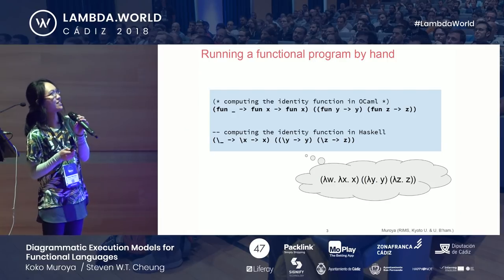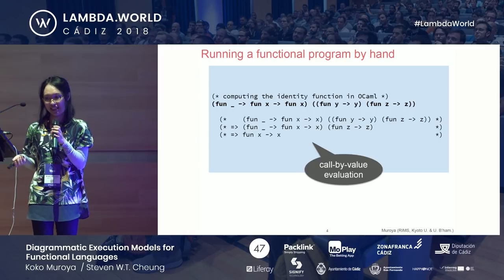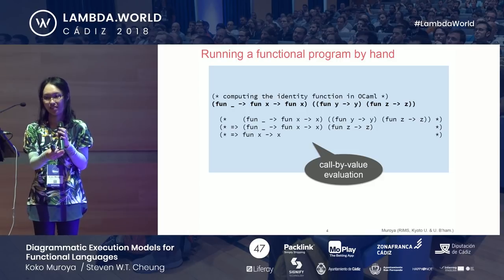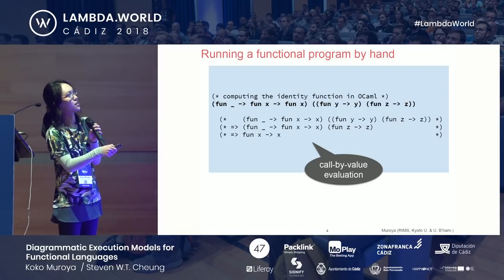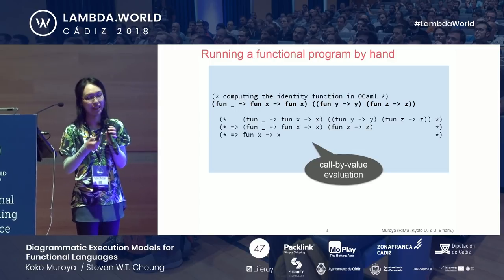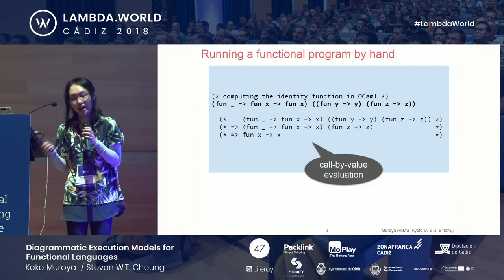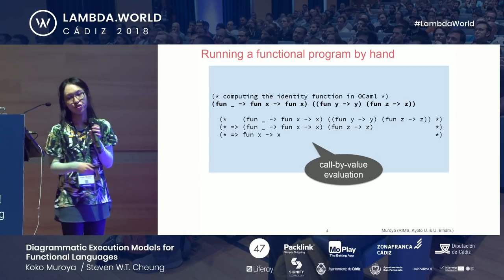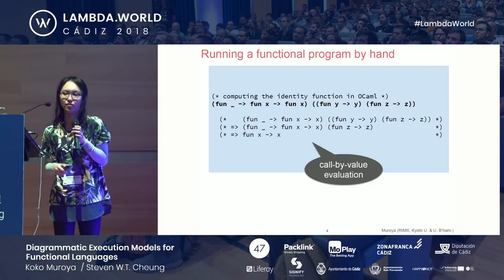Let's look at the OCaml one first. In OCaml, because we use call-by-value evaluation, whenever we see a function applied to an argument, we have to make sure that the argument is evaluated before we apply any function on it. So when we see this program, the function part is not a value yet — it's another function application — so we evaluate it first down to an identity function before we can evaluate the outer function that throws an argument away.